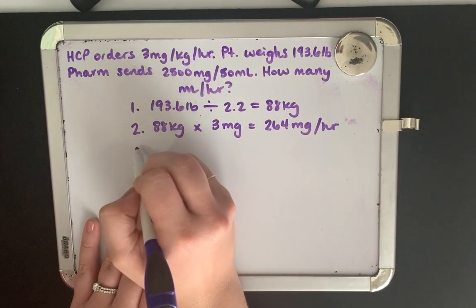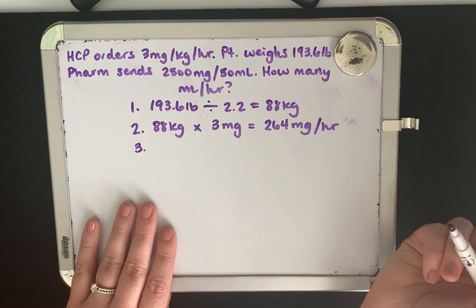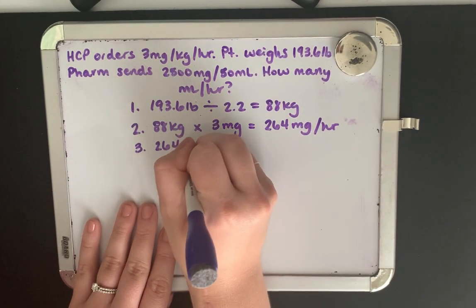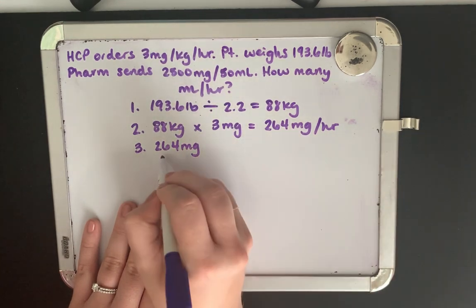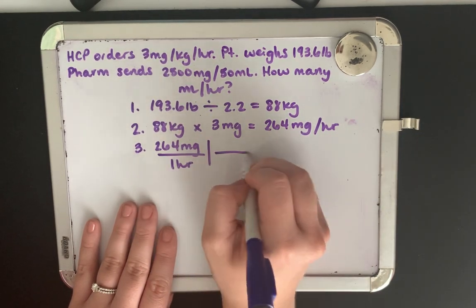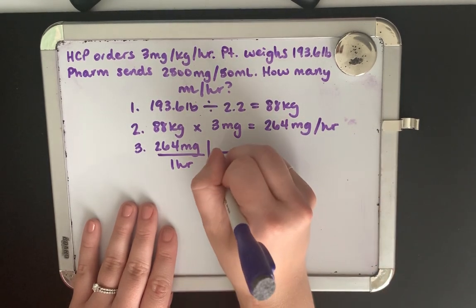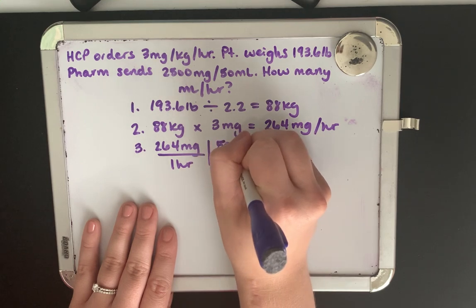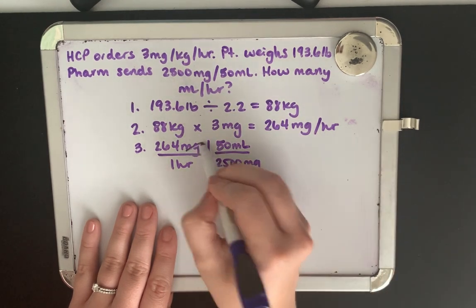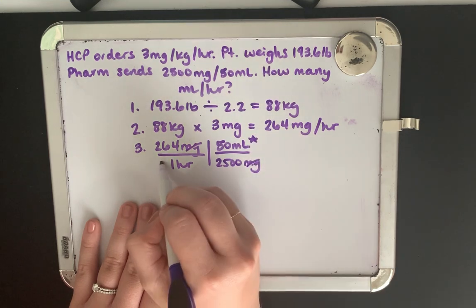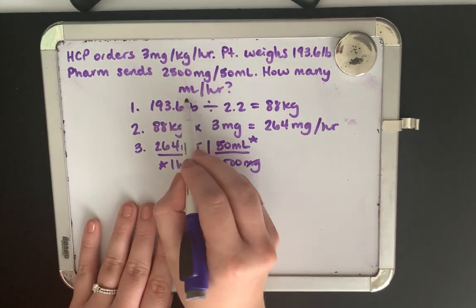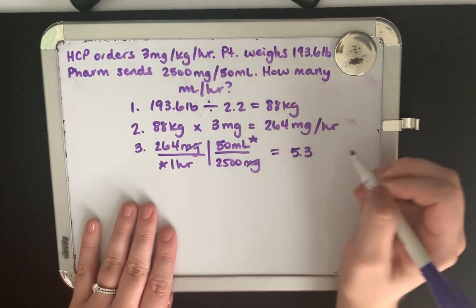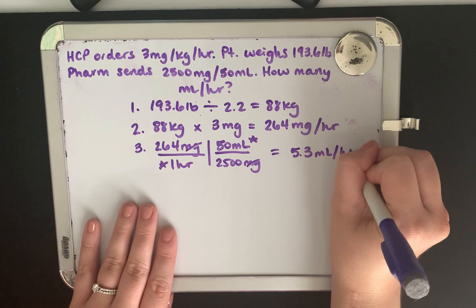So then our last step would be to see how many mLs does this equate to. So we start with what we know, or what we have, so 264 milligrams, and we're giving this over one hour. Our medication comes in 2,500 milligrams and 50 mLs. Our milligrams cancel out, we're left with mLs per hour, which is what we're looking for. And this, when you solve this ends up being 5.3 mLs per hour.